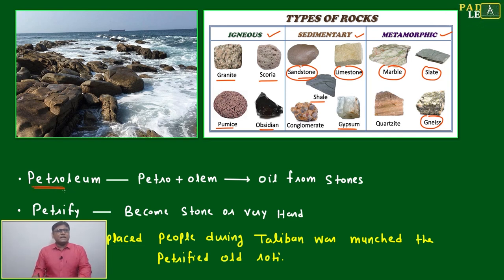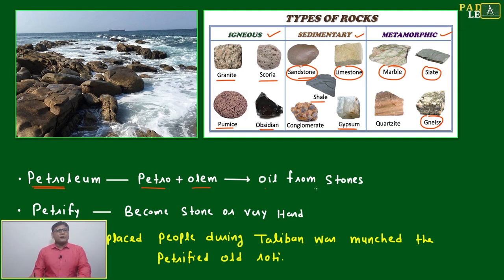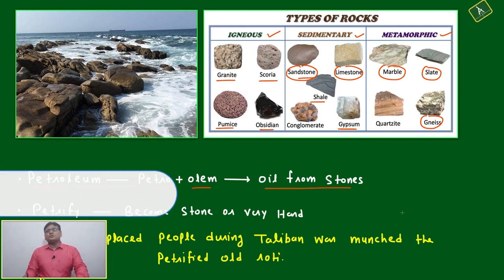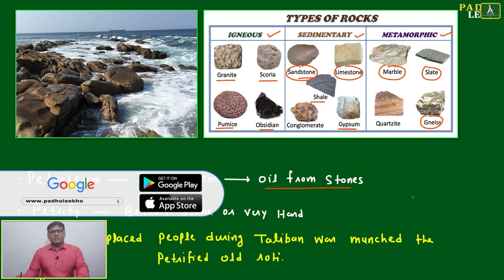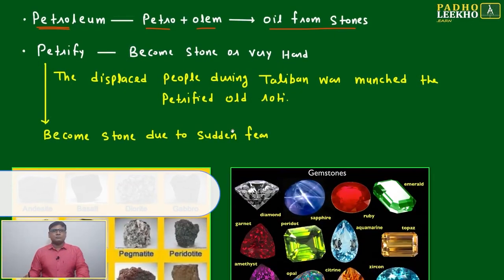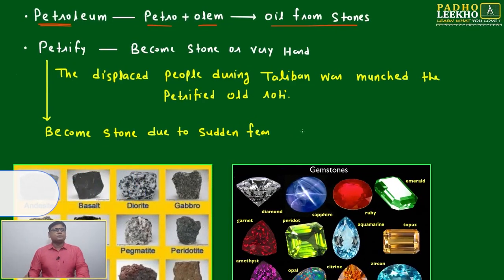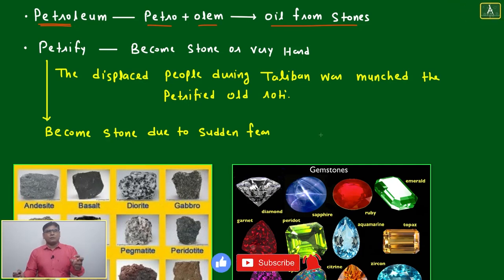Now, petroleum — the first word is related to 'petro,' meaning root of stone. Petroleum means petro plus oleum — oil from the stones. Generally we are taking it from the bedrock; it will be like oil from between two stones or under the bedrock.